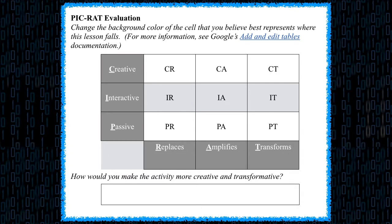The last step on the rubric asks me to evaluate the activity on the PICRAT scale and write some suggestions about how to make the activity more creative and transformative. When I look at the left side of the PICRAT matrix, I need to ask the question, how did the students interact with technology?